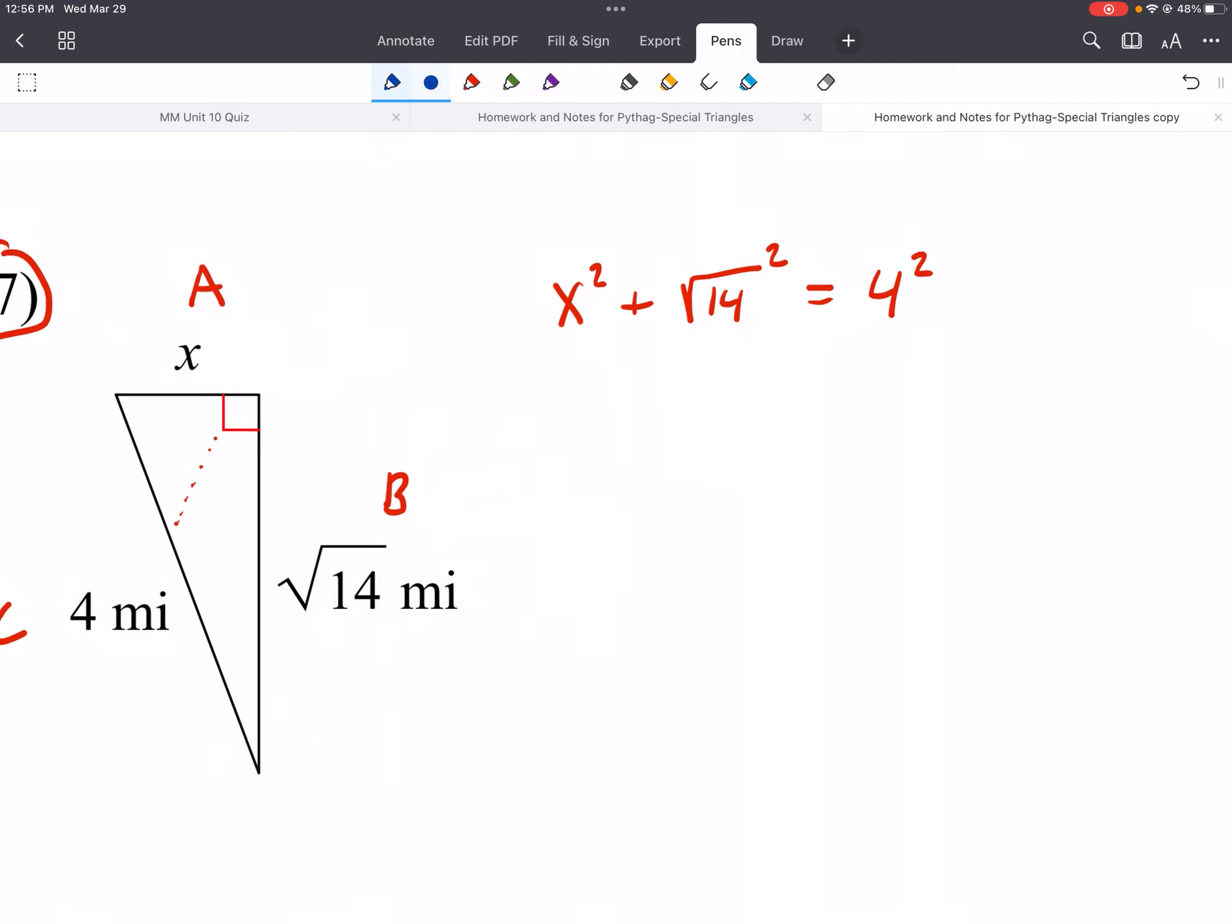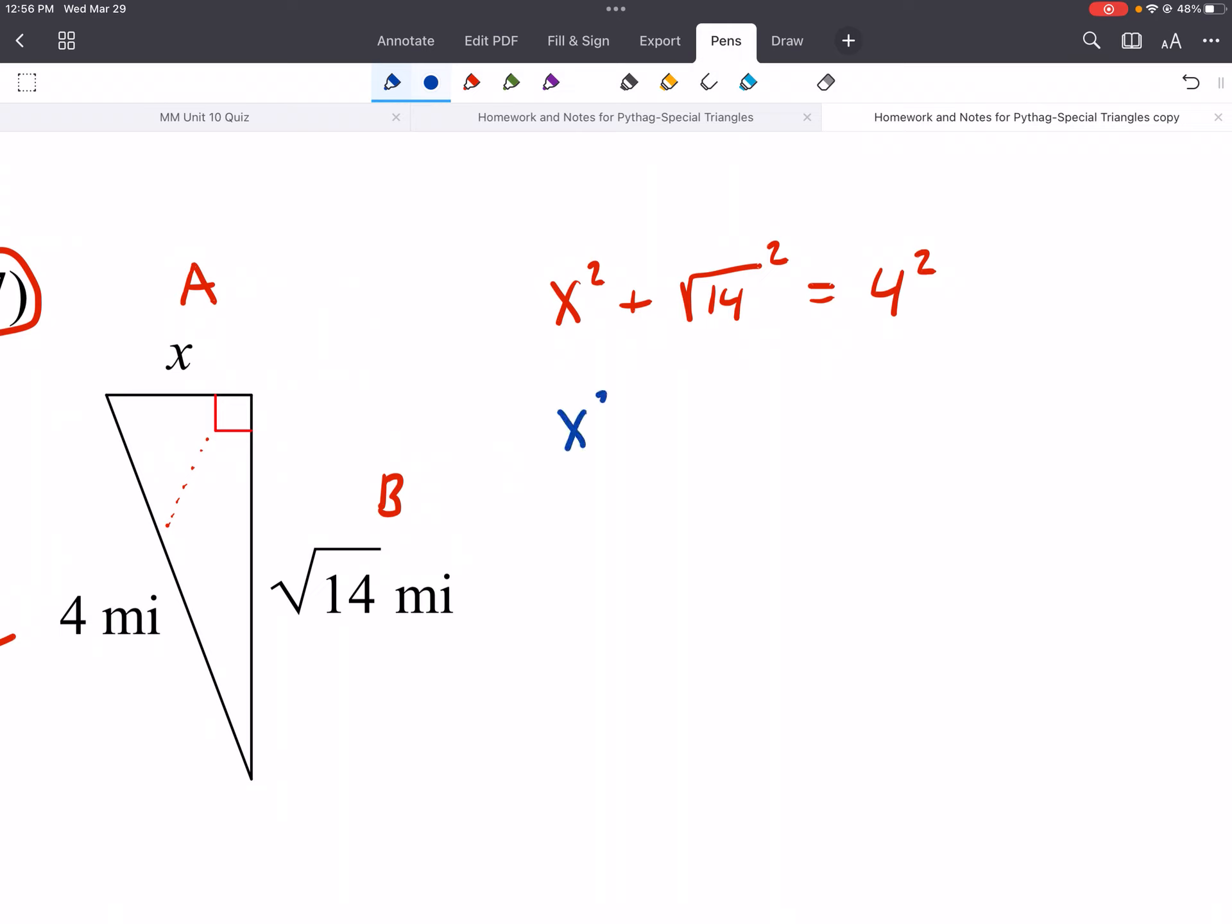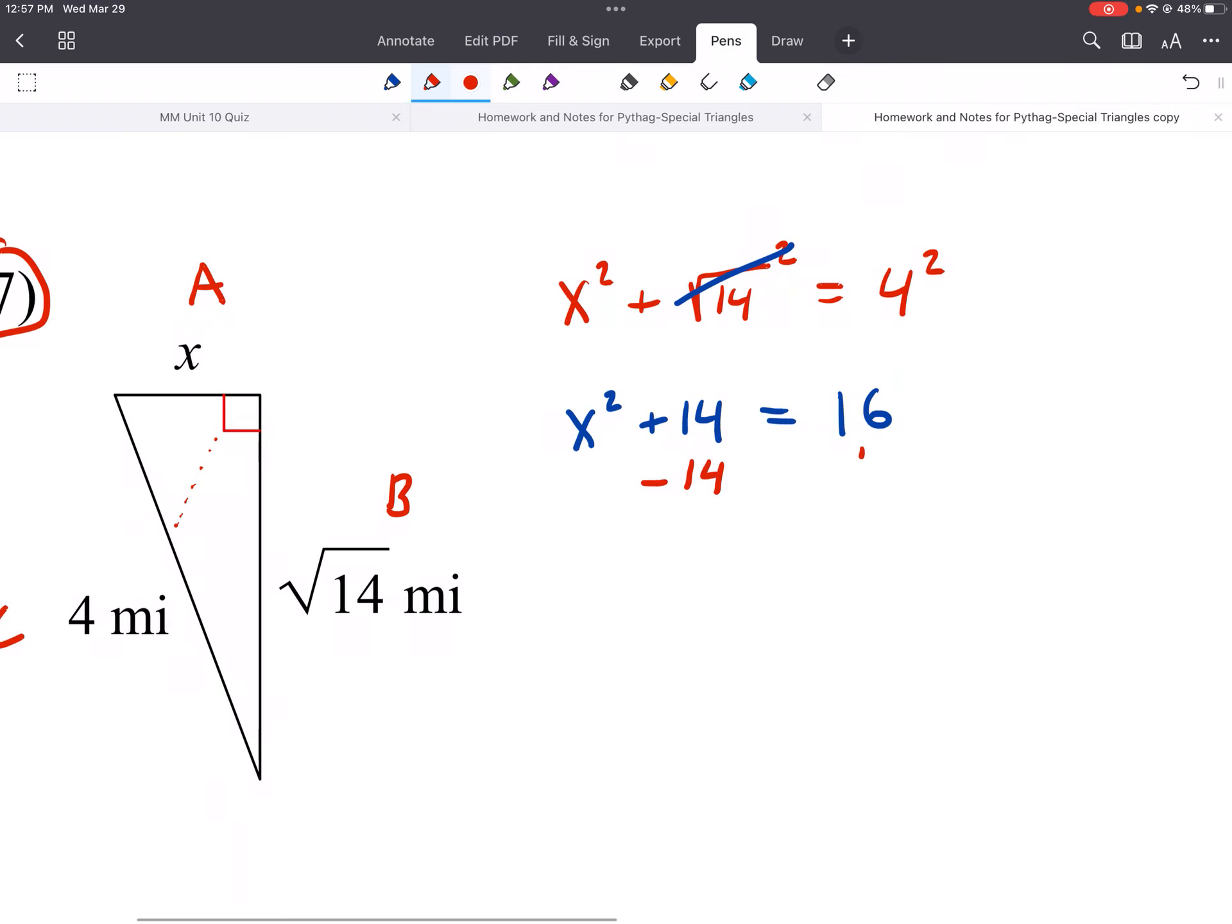So again, simplify everything that you can. You can't simplify X squared. But we can simplify the square root of 14 squared. Again, those are their opposites. Their inverses. They cancel out. So we get plus 14 is equal to, and 4 times 4, 16. So now everything's simplified. Now we can solve. So we want to get X by itself. Again, when we're solving, we're doing the opposite of order of operations, the opposite of PEMDAS. So we would add or subtract first.